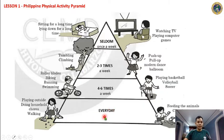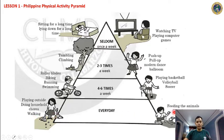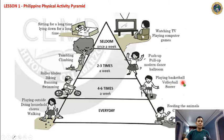Every day we need to play outside as children or young people — doing household chores, walking, feeding animals, or cleaning toys — so there will be engagement of our physical body. Also, four to six times a week, it is suggested to play basketball, volleyball, soccer, rollerblades, biking, running, or swimming. And two to three times a week: push-ups, pull-ups, dance, ballroom, tumbling, or climbing.